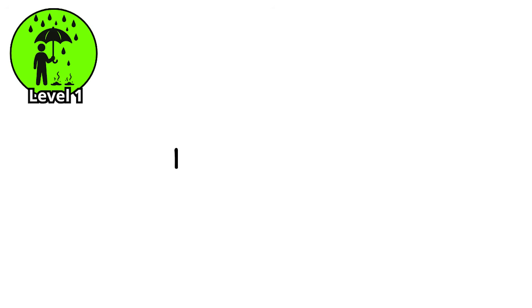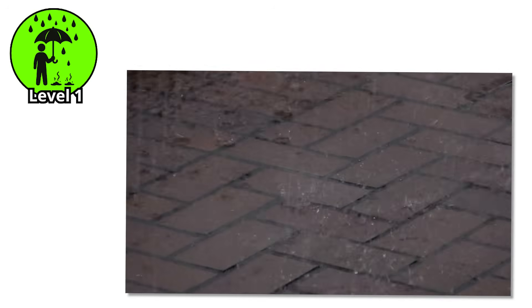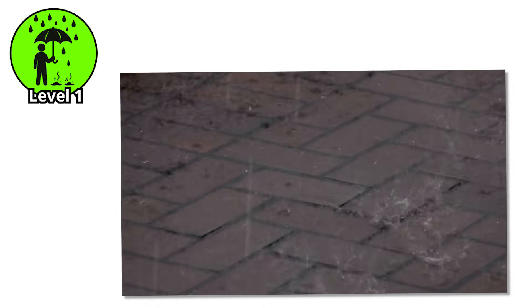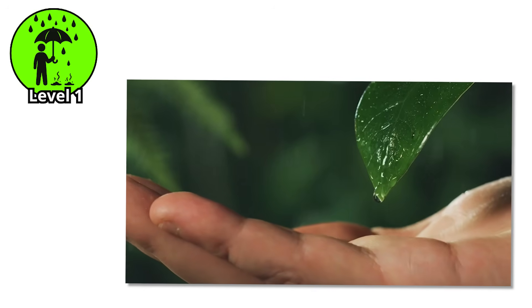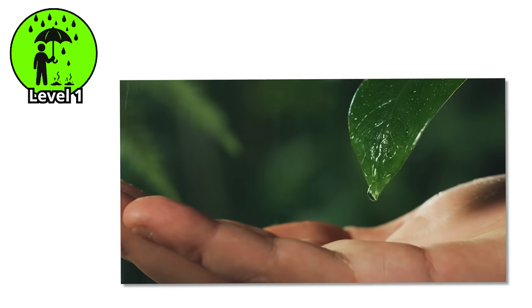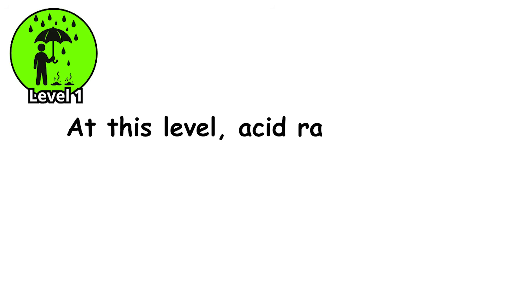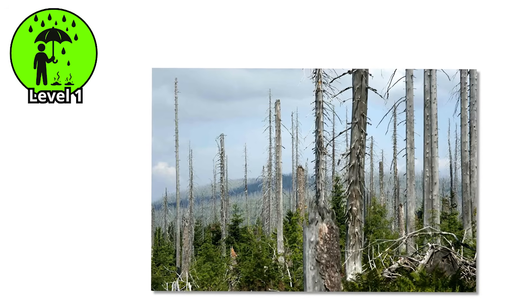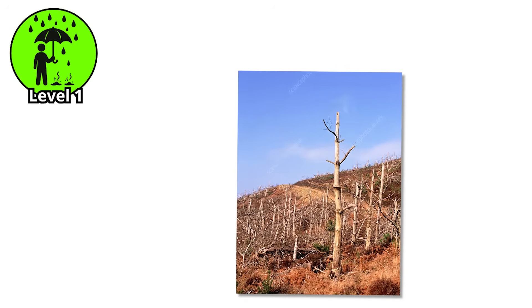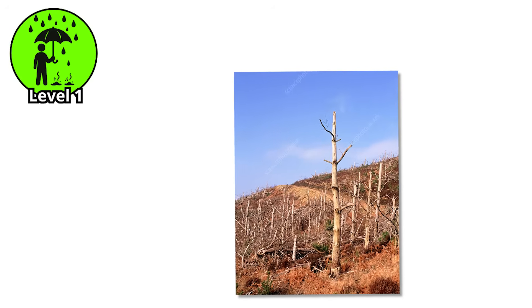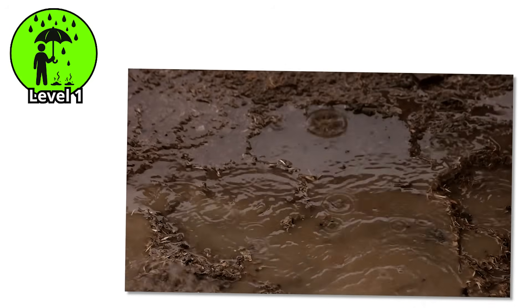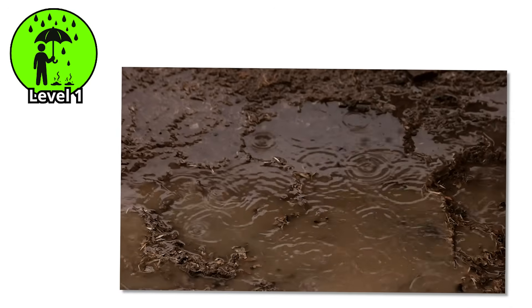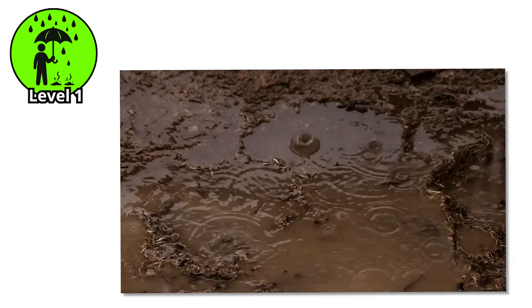Level 1. pH 4.0 to 4.5. You wouldn't feel it at first. No screaming pain, no melting rooftops. Just a cool drizzle on your skin and the slow death of the ecosystem around you. At this level, acid rain begins to weaken forests from the inside out. Trees that have stood for centuries start yellowing at the tips. Needles redden, bark softens, roots fail. The soil itself becomes hostile, its nutrients stripped by acidity.